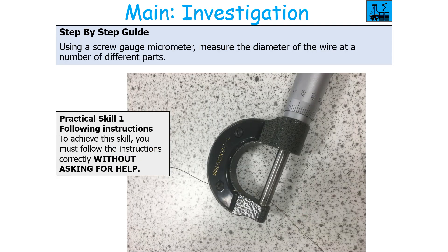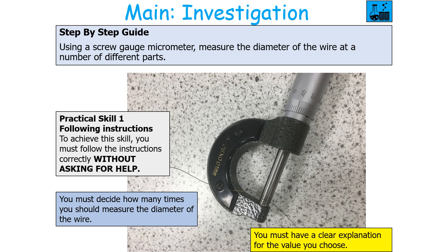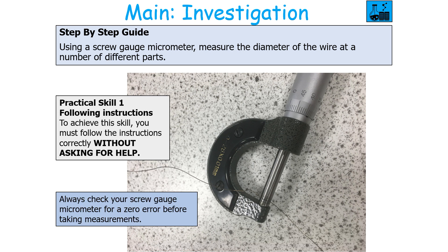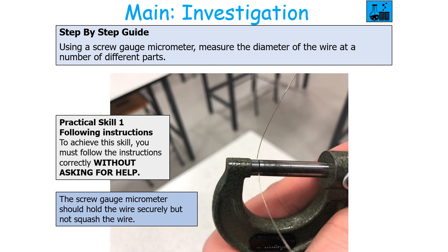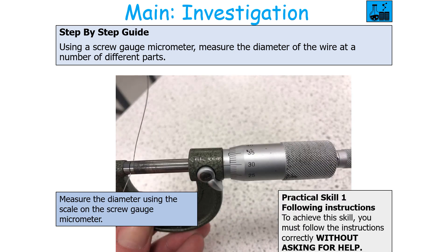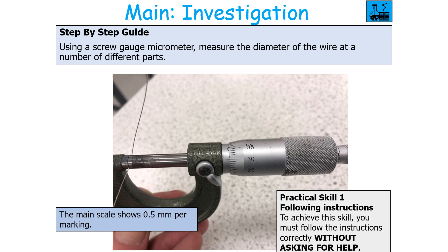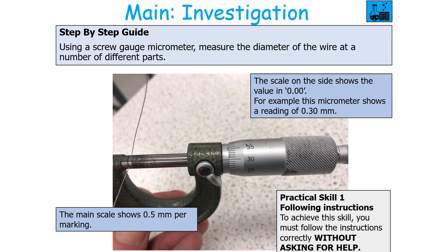You use the screw gauge micrometer to measure the diameter of the wire at a number of different parts. You should decide how many times to measure the diameter and have a clear explanation for why you picked that number. Always check the screw gauge micrometer for a zero error before taking measurements, and ensure it is holding the wire securely without compressing it. The main scale shows 0.5 millimetres per marking and the thimble scale shows the reading in 0.01 millimetres, so for example a reading of 30 on the thimble gives 0.30 millimetres — add main scale and thimble scale together for the full measurement.